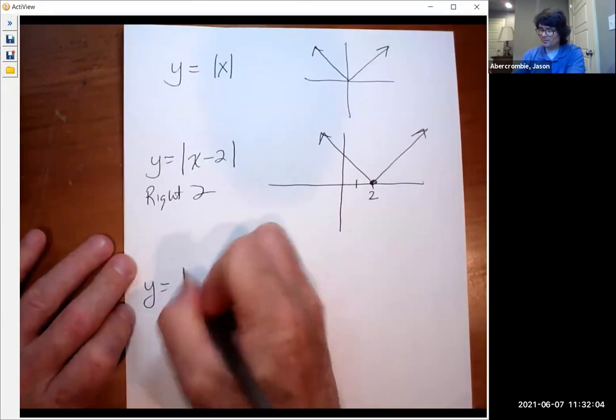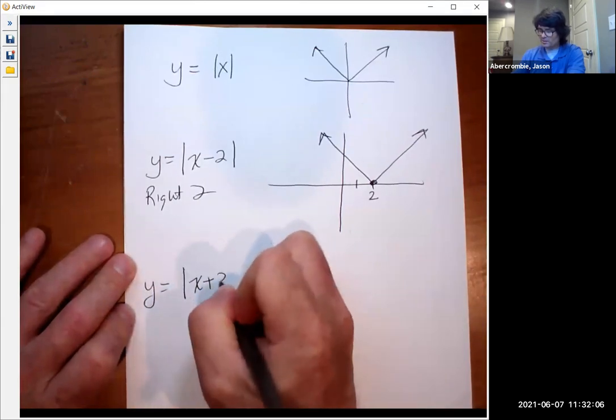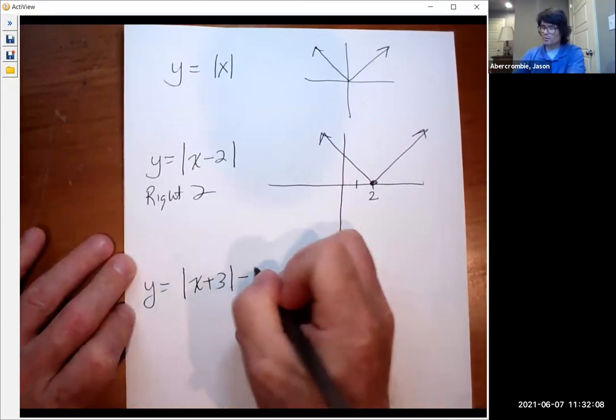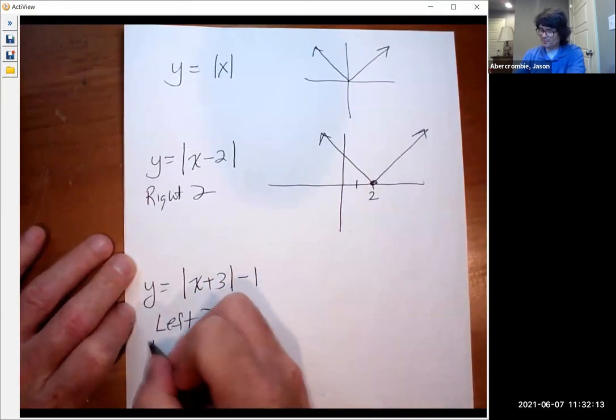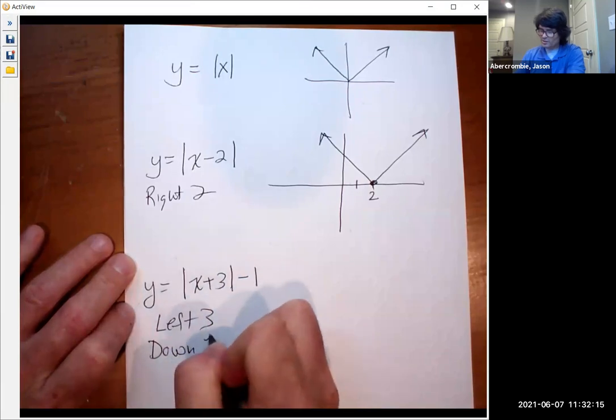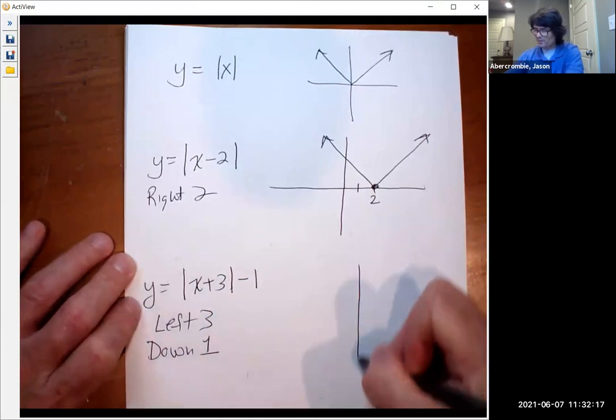And if you had y equals the absolute value of x plus three minus one, this would be left three and down one. And this is just a translation, just like it would be for any other function.